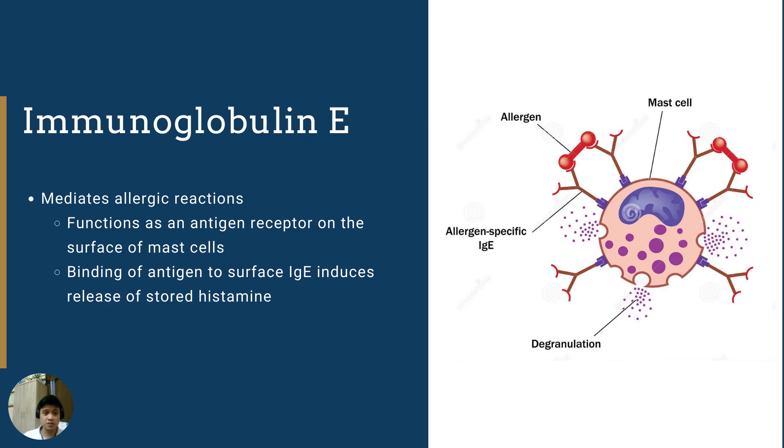The next type would be immunoglobulin E. The primary function of IgE is to mediate allergic reactions. It functions as an antigen receptor on the surface of mast cells. Just take a few moments to look at this image where IgE is present here in the mast cell as the receptor. And the binding of antigen to the surface IgE, which in this case is the receptor, induces the release of stored histamine, which is the process of degranulation.